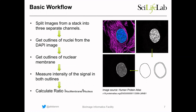Our workflow will be: first split the images — we have three channels and we want to split them into microtubules, nuclei with DAPI, and our signal. Then using the DAPI image, we get the outlines of the nuclei and also the outlines for the nuclear membrane. Once we have these outlines, we measure the mean intensity in these two outlines using our signal channel. Then once we have the measurements, we calculate the ratio of the mean intensity in the nuclear membrane and in the nucleus.